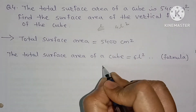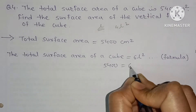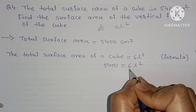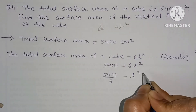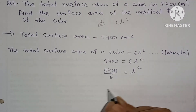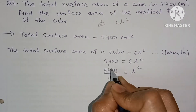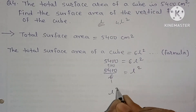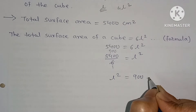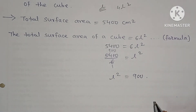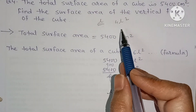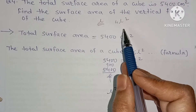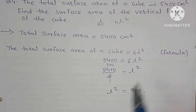Total surface area formula is 6L² = 5400. Dividing both sides by 6: L² = 900. Since the formula for surface area of the vertical faces of a cube is 4L², we keep the value of L² = 900 as it is.